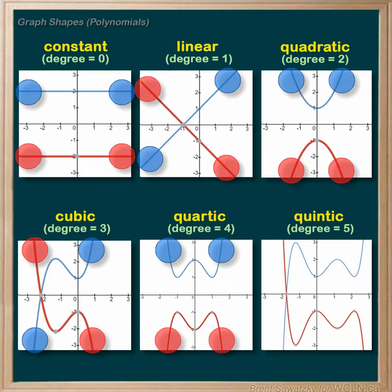For a degree of four, the positive starts in the top left and ends in the top right. And the negative, again opposite, starts in the bottom left and ends in the bottom right. Now let's reflect on this and we can recognize some definite trends here.